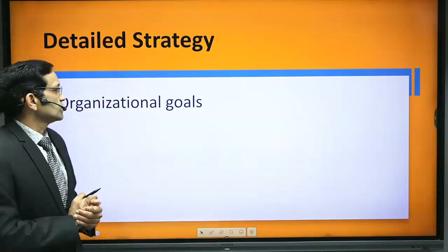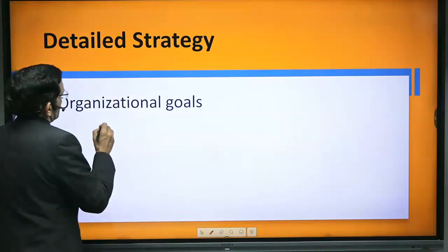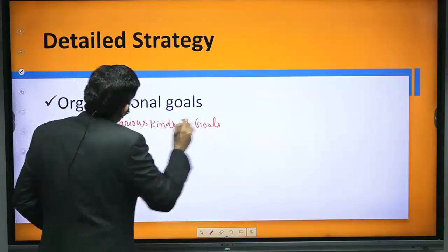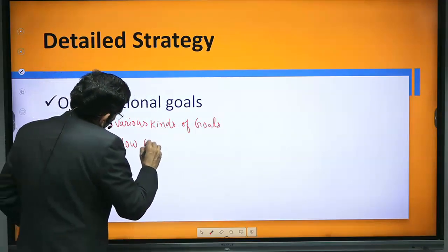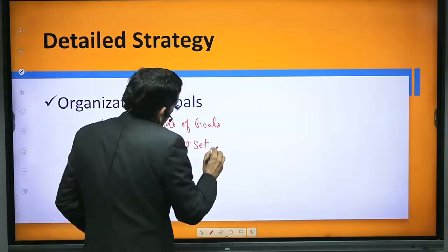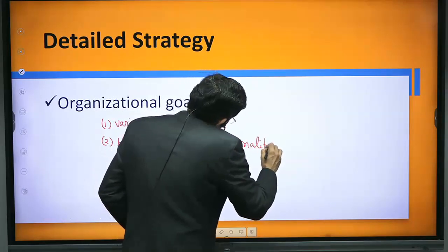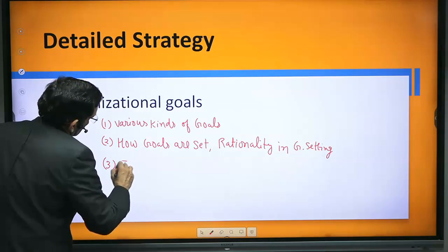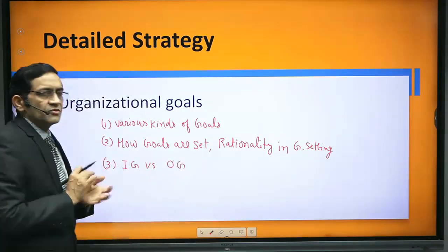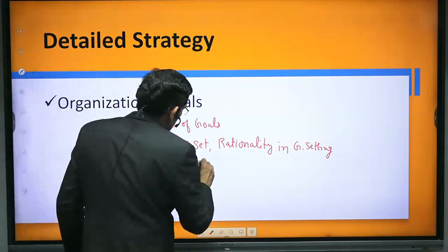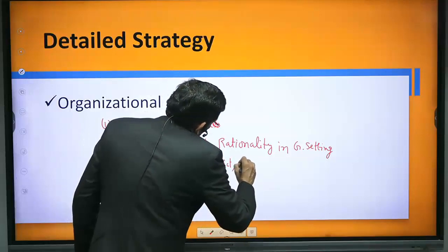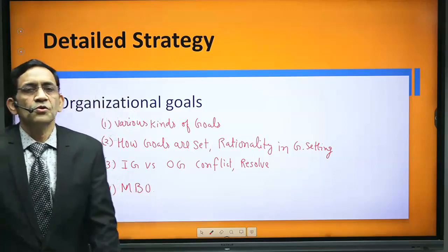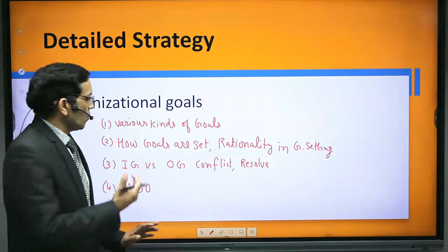For unit two — organization goals — you should prepare: first, various kinds of goals; second, how goals are set and rationality in goal setting; third, individual goals versus organizational goals (IG vs OG) — including what the conflict is and how to resolve it; and fourth, Management by Objectives. These are the four broad areas that form the core of the goal sector.